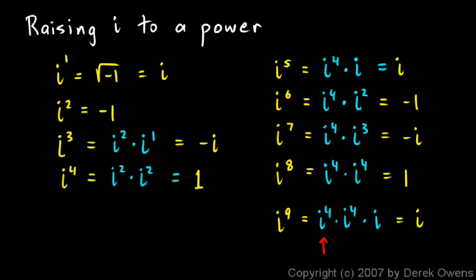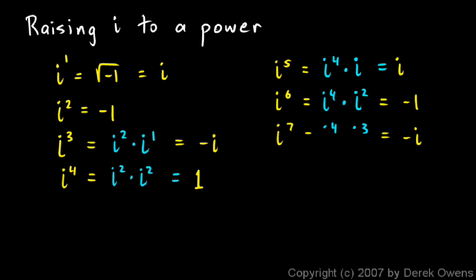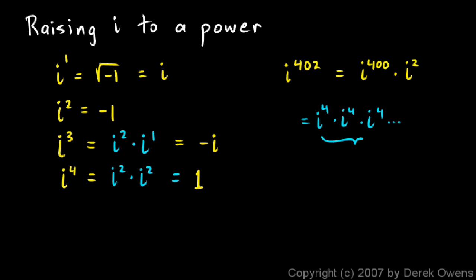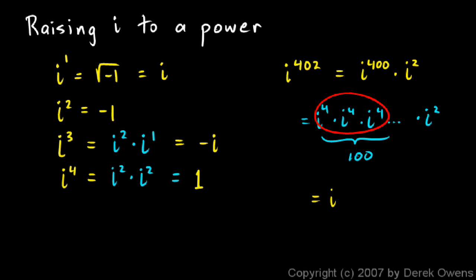So if you need to raise i to a power, it turns out that it's pretty easy. What if you needed to do i to the power of 402? Think of it like this: this is i to the 400 times i squared. And 400 is a multiple of 4, so you can think of this as i to the fourth multiplied together 100 times — and all of those are going to be 1. So this is just 1 times 1 times 1 and so on, times i squared. So i to the 402 is equal to i squared, and i squared is negative 1.